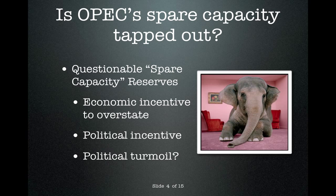In addition to the economic incentives to lie about their oil reserves, OPEC members have huge political incentives to do so as well. Countries may wish to overstate their oil reserves in order to make themselves seem more important than they really are to international economic and military partners. Countries like the United States are heavily dependent on foreign oil and are therefore most likely to make economic and military alliances with countries that can supply them with oil well into the future. Many OPEC countries are in unstable parts of the world, surrounded by potentially hostile neighbors, so the incentive to overstate these reserves in order to secure international military partnerships is enormous.